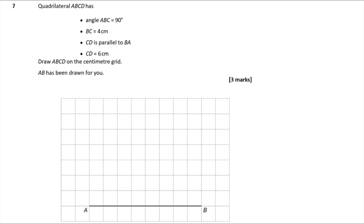Question 7 — quadrilateral ABCD has angle ABC equal to 90°, BC is four centimetres, CD is parallel to BA, and CD is six centimetres. Draw ABCD on the centimetre grid; AB has been drawn for you. With these kinds of questions it's tempting to dive straight in, but it's better to plan out a rough sketch first. I'll sketch it out: they've already given us line AB.